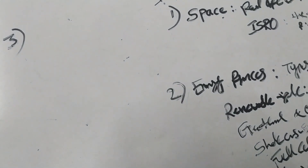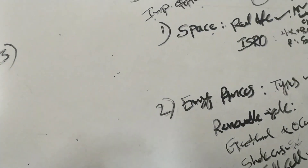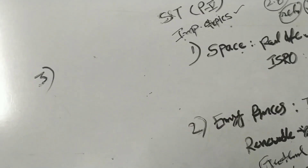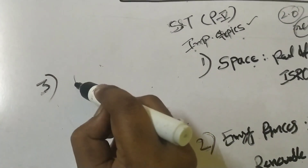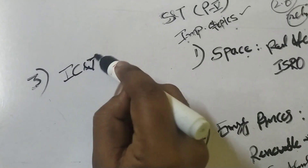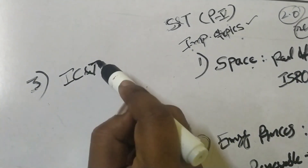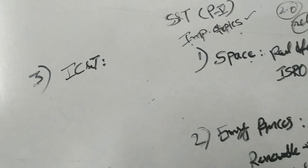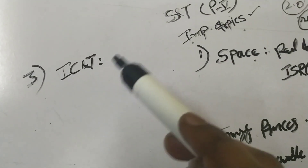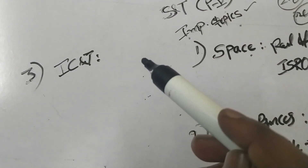The third concept is ICT — Information and Communication Technology. It is not just telecommunication. ICT covers communication, computing, cloud computing, and big data. There is also edge computing, which is the most recent form of cloud computing.